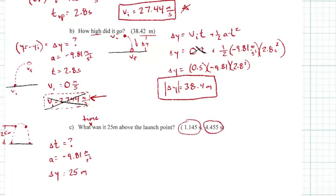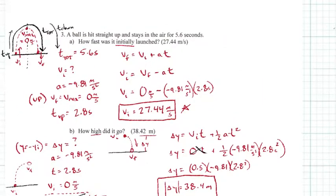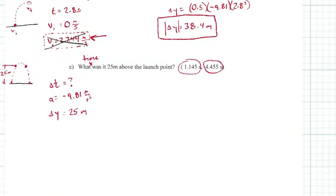Here's one of those where you have to use a previous answer. Since we know the answer is 27.4 right there, we can be pretty sure that that's good to use. So let's use our Vi as well: Vi equals 27.44 meters per second.